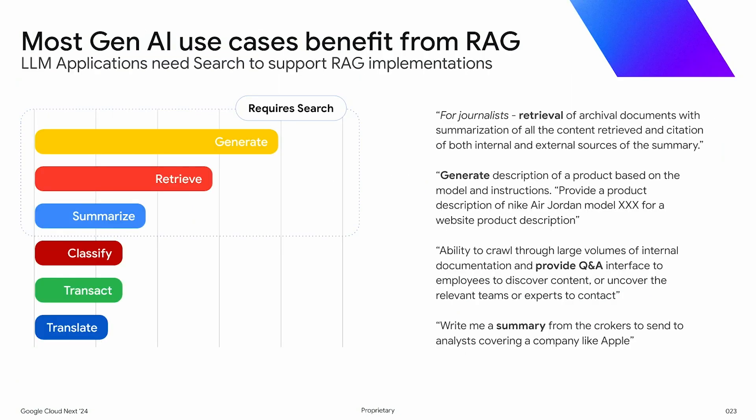Getting into RAG again — what we've also found is that most generative AI use cases do benefit from RAG. If you break down gen AI use cases — typically generating content, retrieving information, summarizing — all of this immediately benefits from having RAG. These are some of the top use cases. There are a lot of different use cases, again, where people find they need these things.